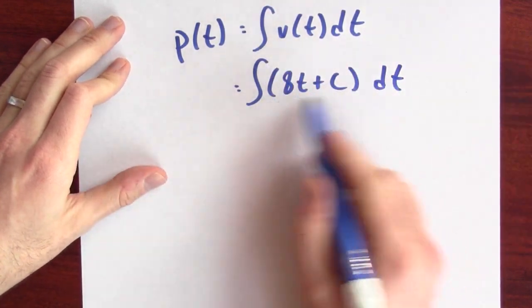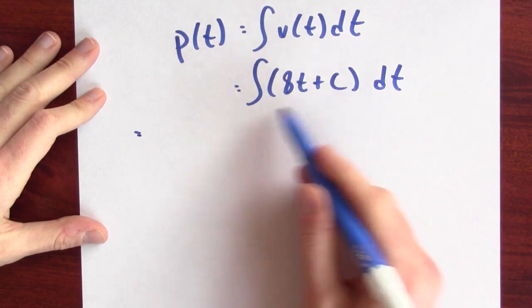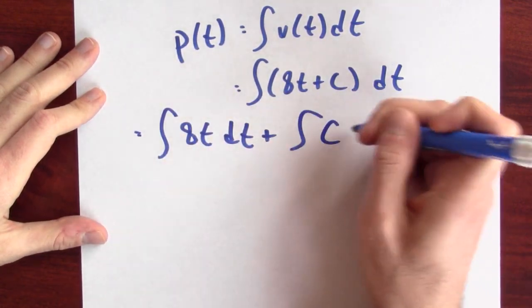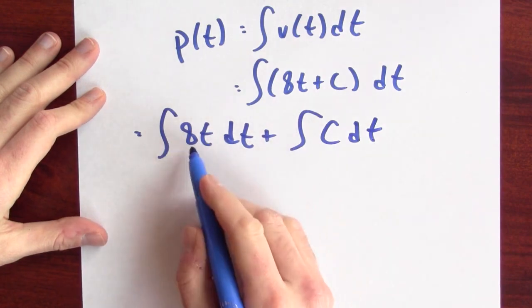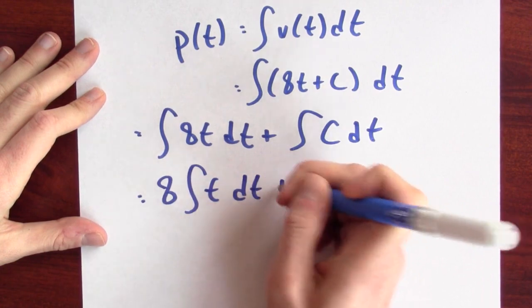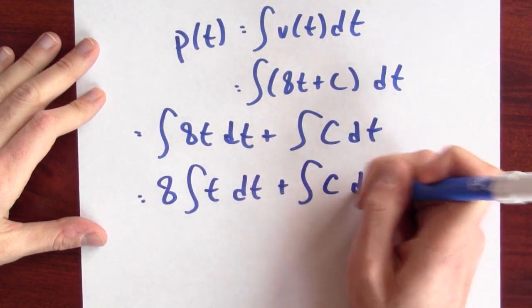So, I want to anti-differentiate 8t plus c. Well, that's an anti-derivative of a sum. So, it's the sum of the anti-derivatives. And what's an anti-derivative for 8 times something? Well, that's a constant multiple. So, it's 8 times the anti-derivative of t plus an anti-derivative for c.